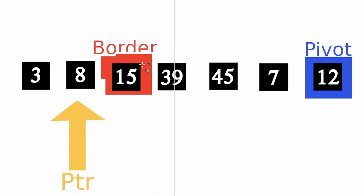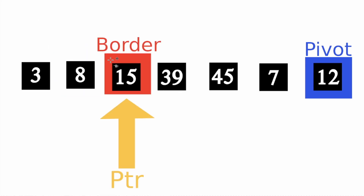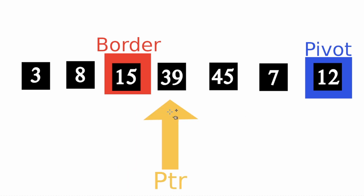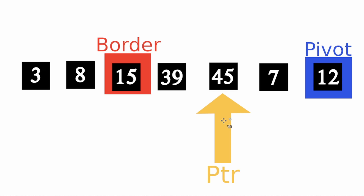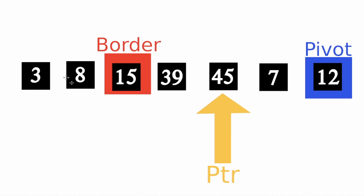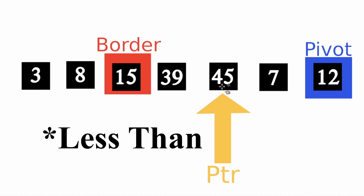Then increase the border value and also increase the pointer. As you can see, on the left side of the border there are always elements smaller than the pivot point. The next step is to ask if 15 is less than 12. Since that is not true, I just move the pointer and leave the border where it is. Let's continue comparing 39 to the pivot point — 39 is not less than 12, so let's move the pointer. Same for 45: not less than 12, so move the pointer along.